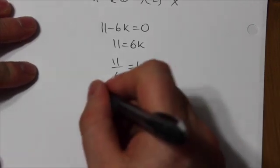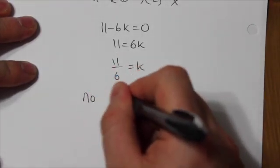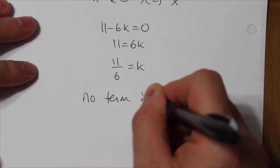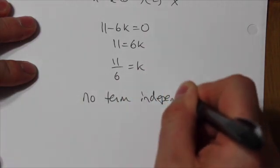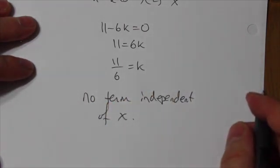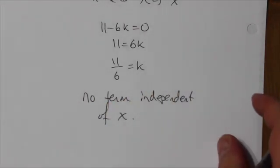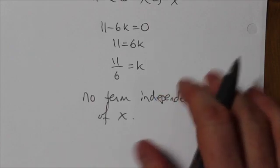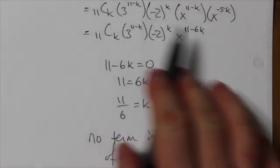Well, it means there is no term independent of x. It means the thing I'm being asked to find simply doesn't exist in this question. And that's an okay solution. If it did exist, what I would do is take that k and plug it back into this expression and figure out what all the terms are.